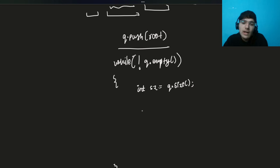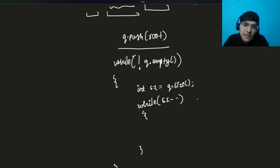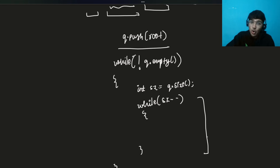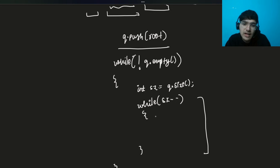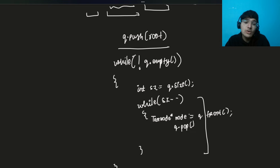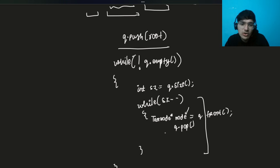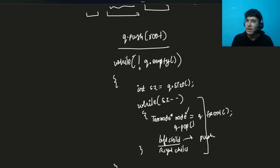Run a while loop `while(size--)` to process all nodes in the current level. For each iteration, pop the front node: `node = q.front(); q.pop()`. These nodes are in the current level. Then push their children for the next level — check if left child is not null and push it, similarly check the right child and push it.